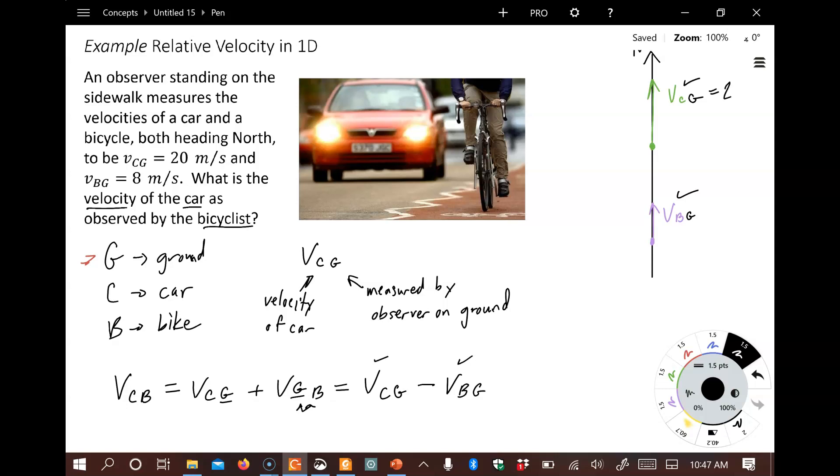And so we know what the values of these guys are. VCG is 20 meters per second, and for the bike as observed by someone on the ground, it's 8 meters per second. When we plug these in, we're going to end up getting 20 meters per second minus 8 meters per second, and we see that we end up getting the same result that you may have gotten just by thinking about it in your head. Now, this same type of relative velocity addition carries over into two dimensions, where it's probably impossible to do this in your head. But the same methodology we just saw here works in two dimensions. You just need to use vector addition. We'll look at that next.